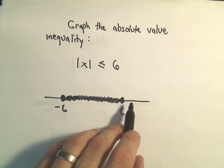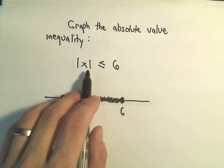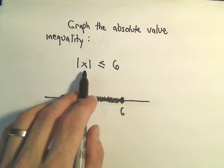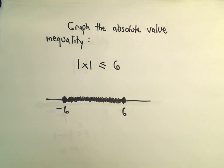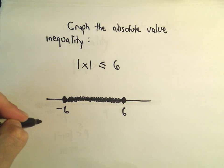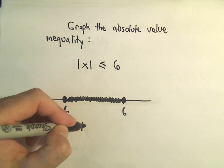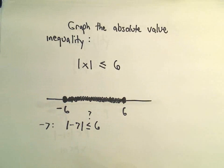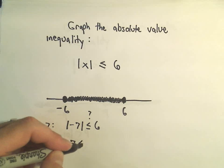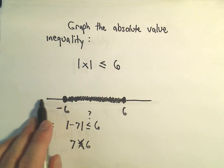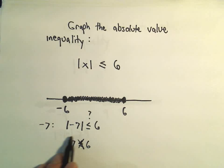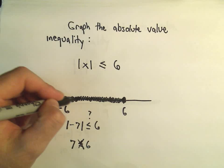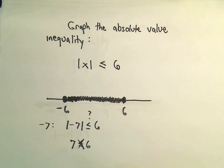Notice if you take anything bigger than 6, say 7, 8, 9, or 10, the absolute value of those numbers would be themselves — 7, 8, 9, or 10 — and none of those are less than or equal to 6. Likewise, if we try negative 7, the absolute value of negative 7 is 7, which is not less than or equal to 6. So the absolute value of any number to the left of negative 6 gives you something bigger. We now have the number line for this inequality: every number between negative 6 and 6.